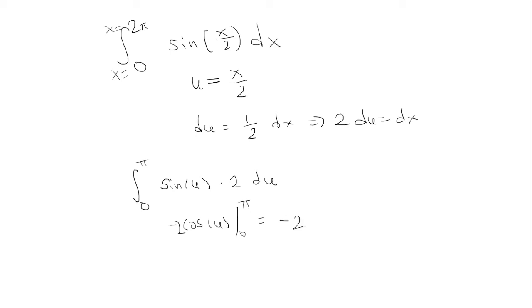So I'm going to plug in π first, and then subtract it when I plug in 0. Cosine of π is negative 1. So we have negative 2 times negative 1. We have 2 consecutive negatives, so that's going to turn into a positive.